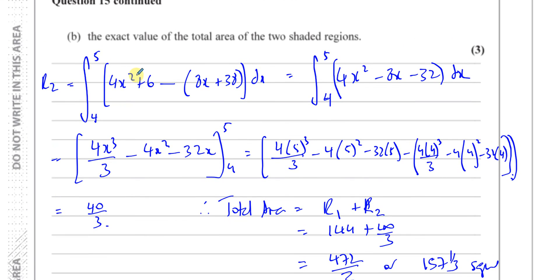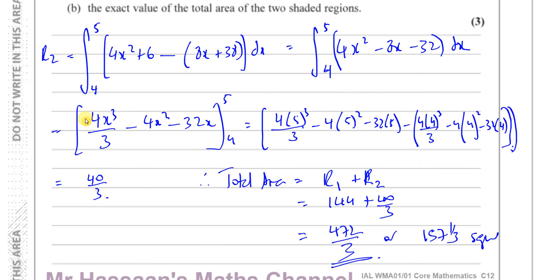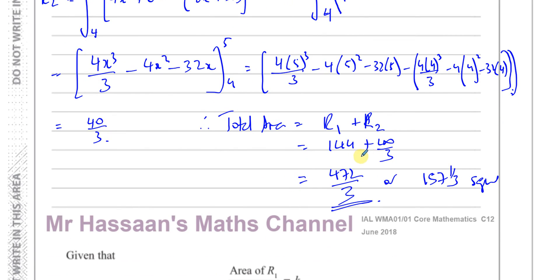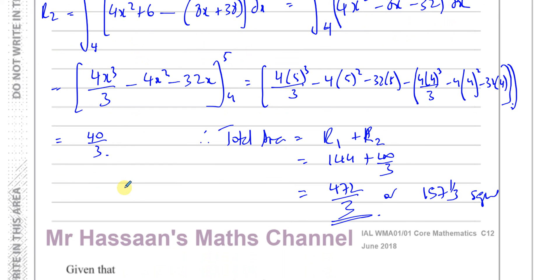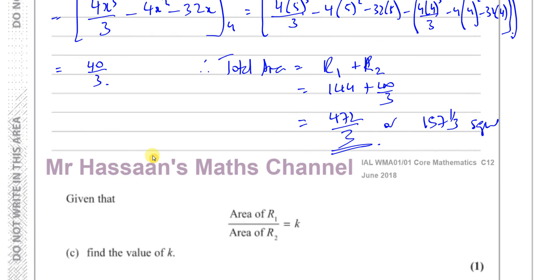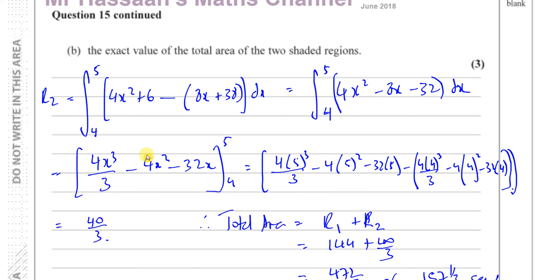If you had integrated the other way around — using the same expression we got before — you would have got a negative area: minus 40 over 3. But when you add it, you have to add it as a positive area, because area is a scalar quantity. So you don't add negative areas. That's part B done.